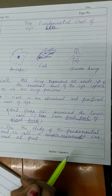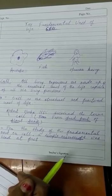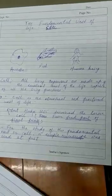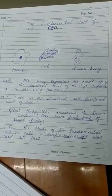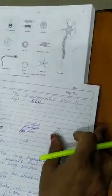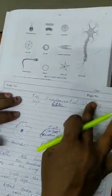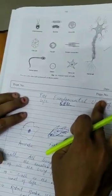Does that mean the shape of cells in plant or animal cells are all the same? No, it is not the same. You can see the different shapes of cells in human bodies. The shape of a cell varies in human bodies.